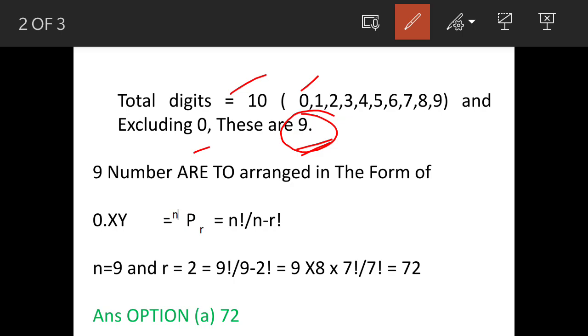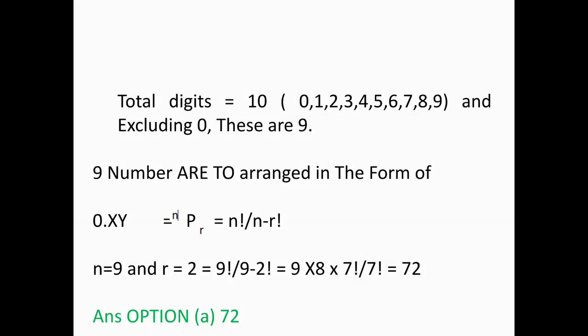Now these numbers are to be arranged in the form of 0.XY. So we will use formula of permutation nPr is equal to factorial n upon factorial n minus r. n is equal to 9 and r is equal to 2. So when we put up the value our answer is 72. So hope it is clear.